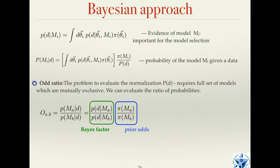Quite often we want to answer the question of model probability, but it's non-trivial because there is a normalization factor. To know the probability of the data, you would need a complete set of models, which is very hard to have. To avoid this problem, people introduce what is called the odds ratio — the ratio of probabilities of model A over model B given the observational data. This avoids needing absolute values; we just say which model is more likely.